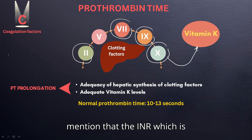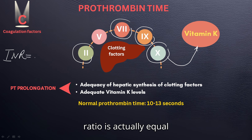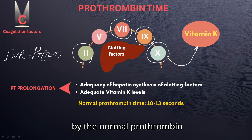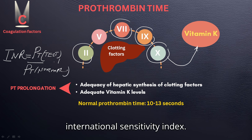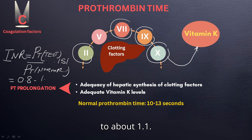The INR, which is International Normalized Ratio, is equal to the prothrombin time of the test divided by the normal prothrombin time, multiplied by the International Sensitivity Index. INR is usually around 0.8 to about 1.1.